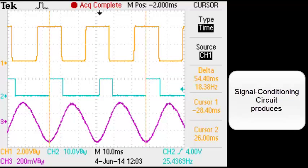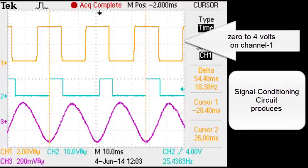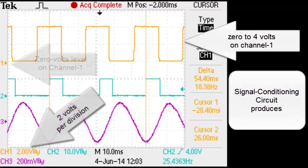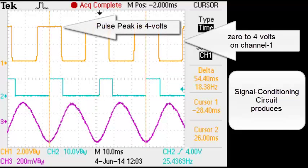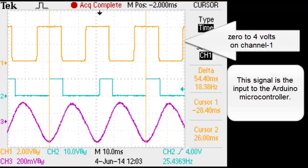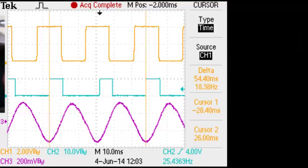Signal conditioning circuit produces 0 to 4 volts on channel 1. That's the 0 volts level on channel 1, set at 2 volts per division. Therefore, the pulse peak is 4 volts. This signal is the input to the Arduino microcontroller. The Arduino input range limit is 0 to 5 volts.